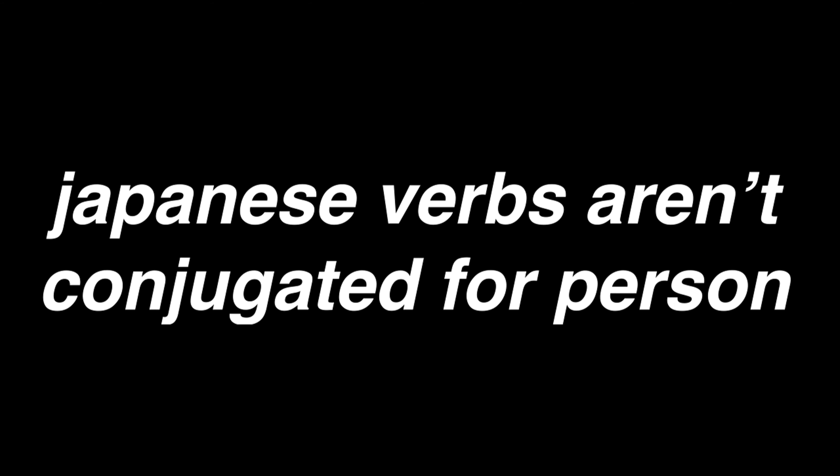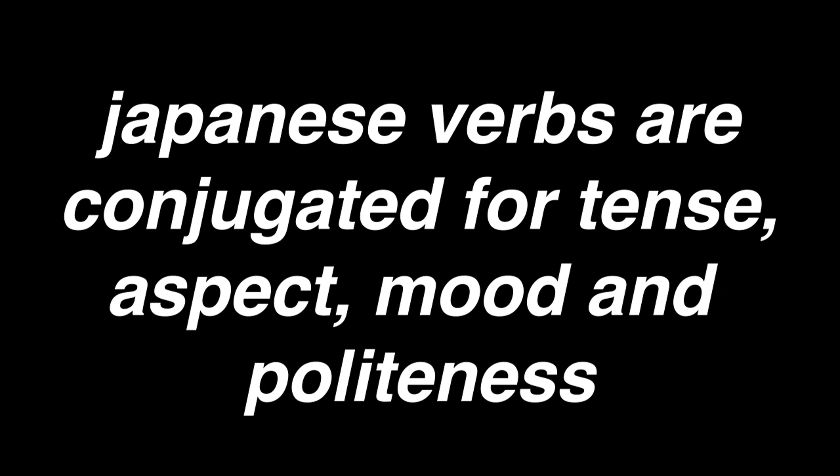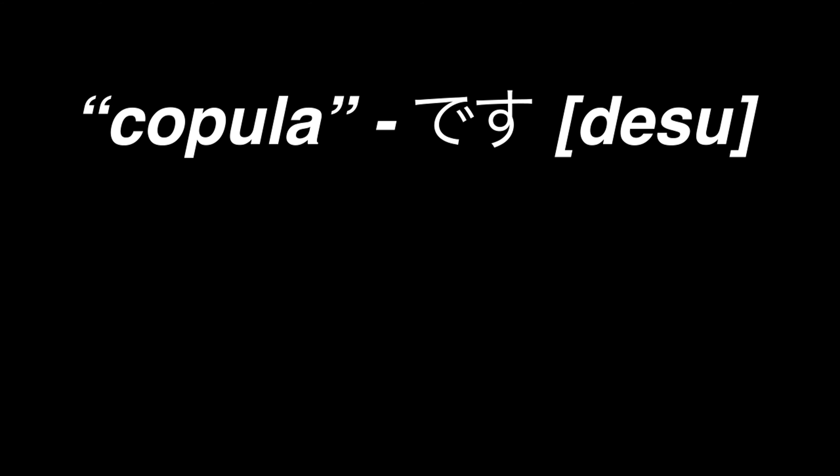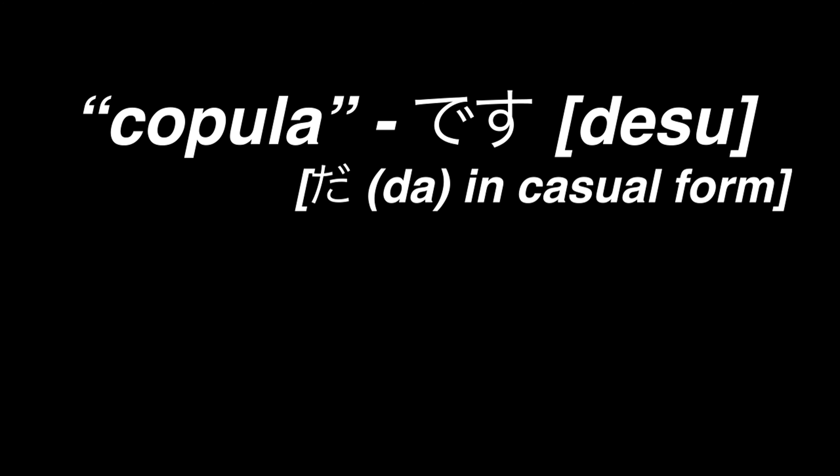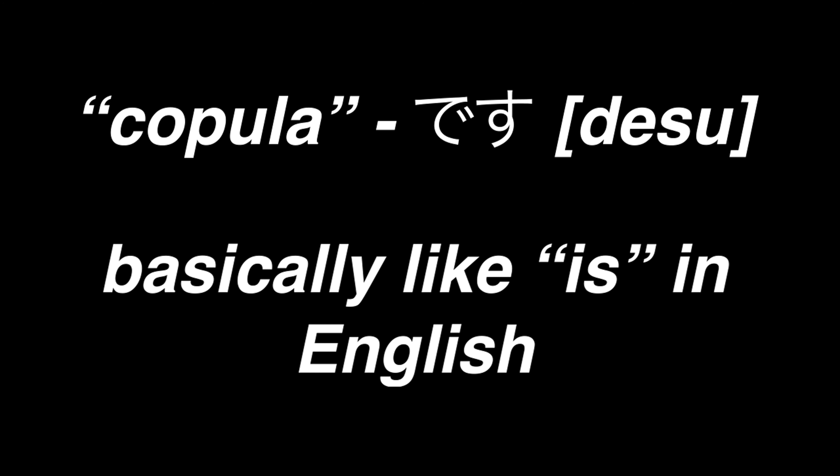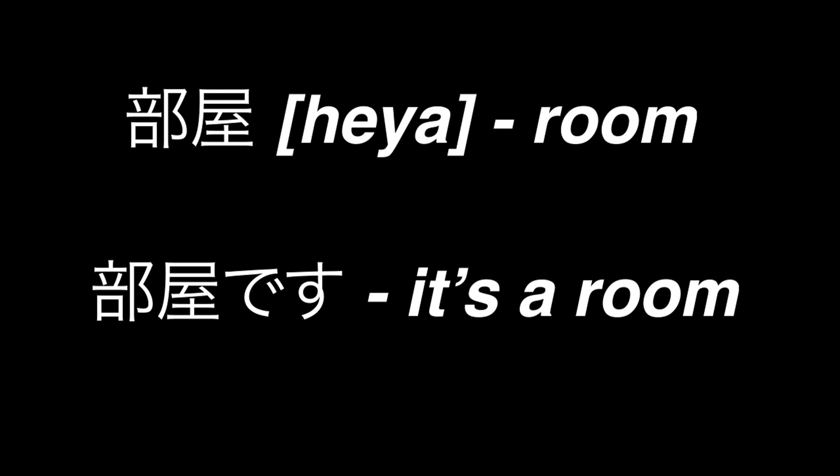Verbs in Japanese are never conjugated for person, but they are for tense, aspect, mood, and politeness. Japanese has a popular desu, or da in the casual form, which is something equivalent to the English verb to be. For example, heia means room, and we can turn it into a sentence by just adding desu — heia desu, it's a room.